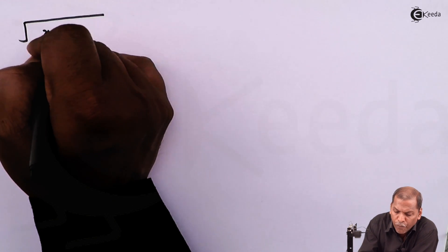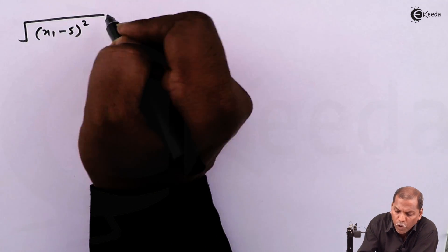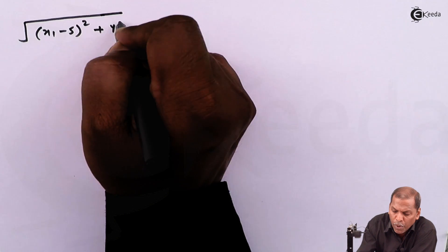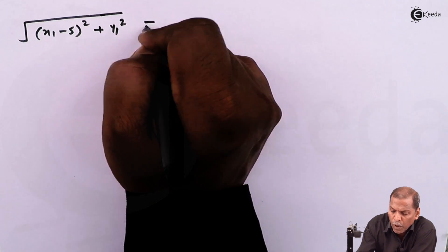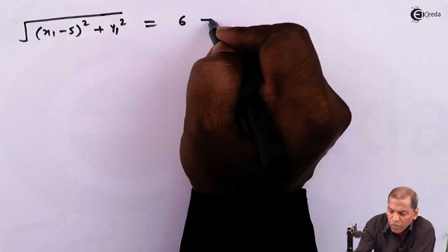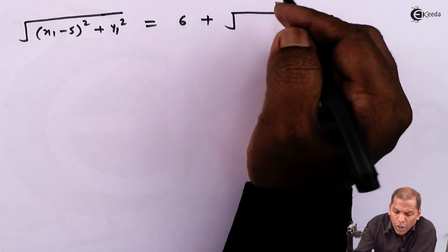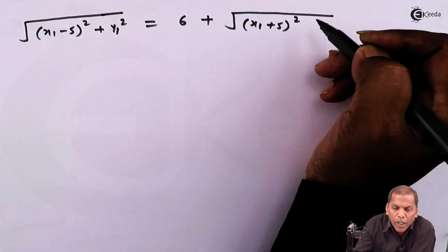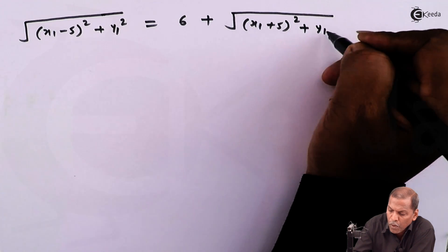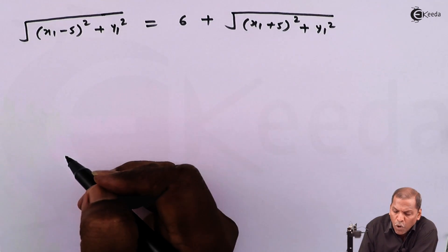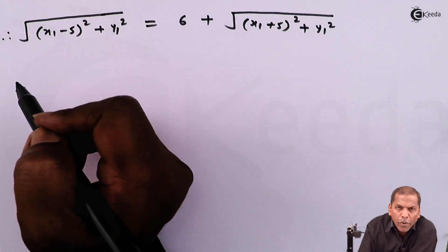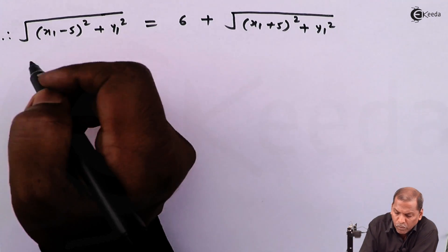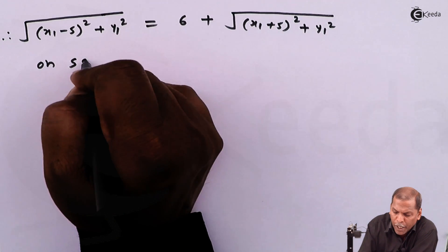Therefore the next step will be: the square root of (x1 minus 5) whole squared plus y1 squared is equal to 6 plus the square root of (x1 plus 5) whole squared plus y1 squared. Now to remove the radical part, that is the square root, we have to square both sides of the above equation.